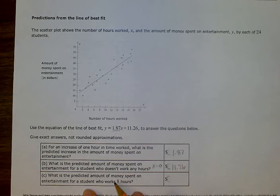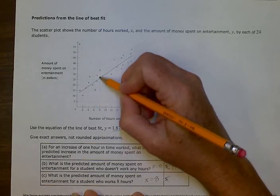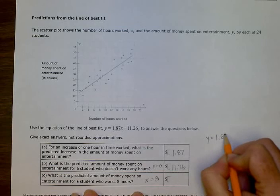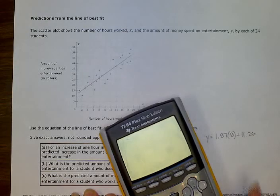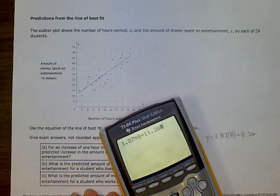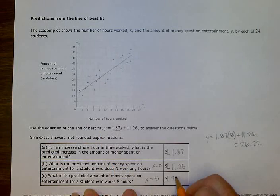What is the predicted amount of money spent on entertainment for a student who works eight hours? So that's when x equals eight. Okay, so let's look. It should be somewhere between $25 and $30 right here. Let's put it into the equation. y equals 1.87 times eight plus 11.26. Okay, so in my calculator. Let me quit what I was doing. 1.87 times eight plus 11.26 equals $26.22. So that makes it our answer.